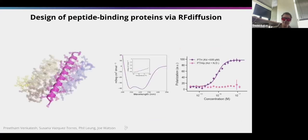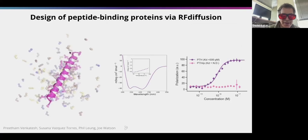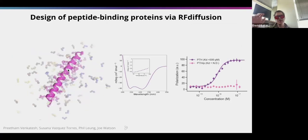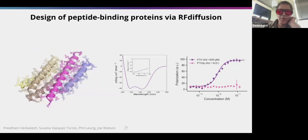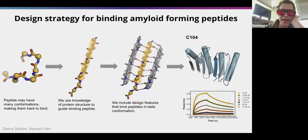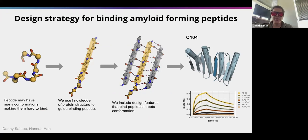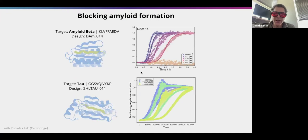We can also use this process to design proteins that bind to flexible peptides. This is parathyroid hormone shown in pink, and we start the diffusion process around it to design proteins that bind quite tightly. A particularly interesting and important class of peptides are those involved in amyloid disorders, and we've developed a general strategy to make binders to that class.